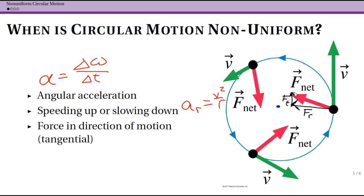You can imagine breaking this net force into a component that is radial and a component that is tangential. You see that this component is parallel to the instantaneous velocity vector; it is also tangential to the circle.